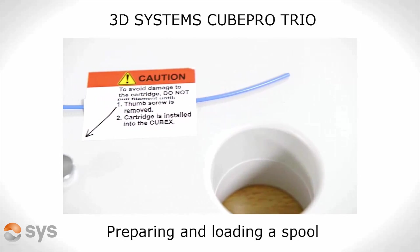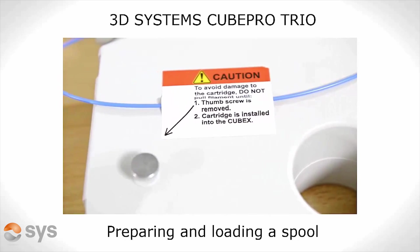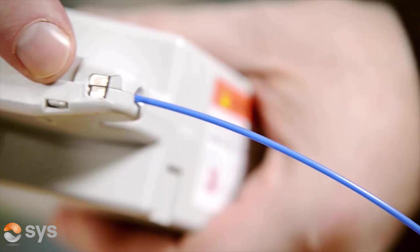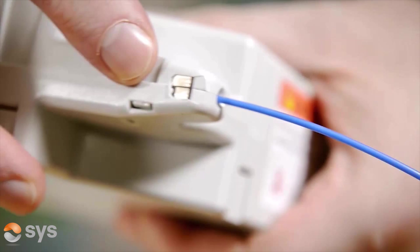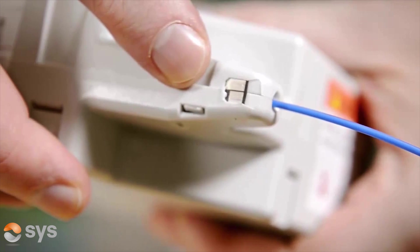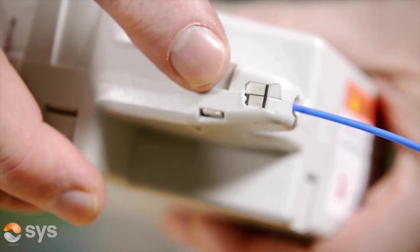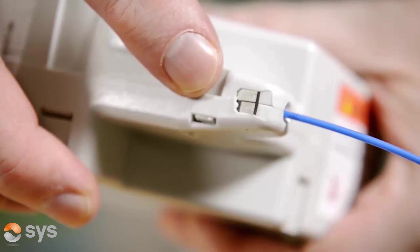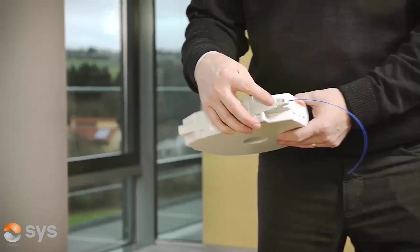The Cube Pro has a similar fully enclosed cartridge to the Uprint SE. There is just the need to remove a transportation screw prior to loading. The detection chip monitors filament status such as the amount of available material, but unlike the Uprint SE does not detect the filament color or the material type. This needs to be manually entered later.